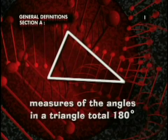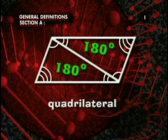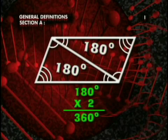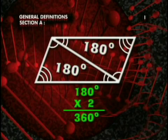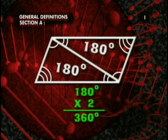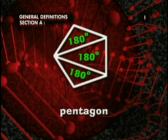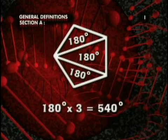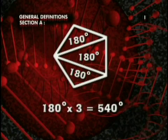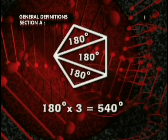Let's look at this quadrilateral. We can cut it into two triangles, so the sum of the measures of its angles is 180 times 2, which is 360 degrees. Let's try a pentagon — we can divide it into three triangles, so the sum of the measures of its angles is 180 degrees times 3, which is 540 degrees.